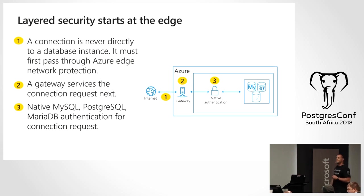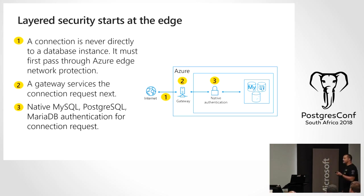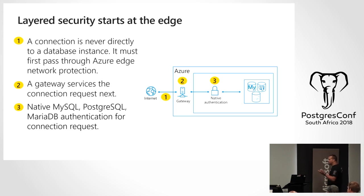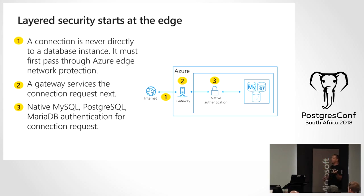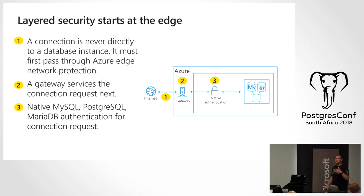It affected SuperMicro, one of the biggest motherboard manufacturers. Microsoft released an official statement saying it doesn't impact us as we don't use SuperMicro. Regarding our VNet and security architecture: a connection is never directed directly to a database instance — it must pass through the Azure Edge network protection. When you create the database, it's always locked down. You then create firewall rules and optionally use multi-factor authentication or Azure Active Directory authentication on top, giving you three layers. We also added Advanced Threat Protection with anomaly detection.